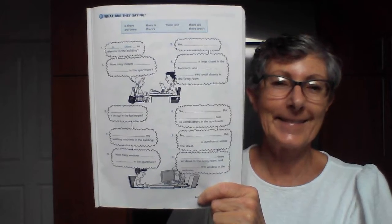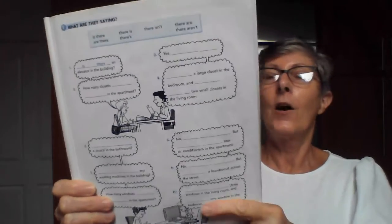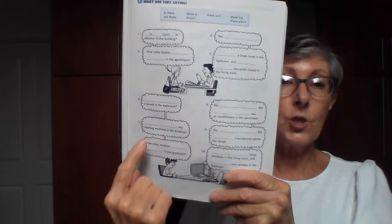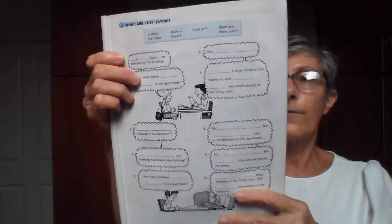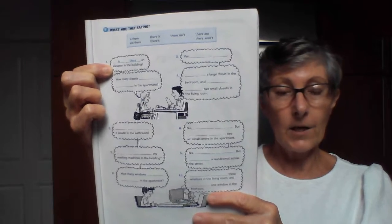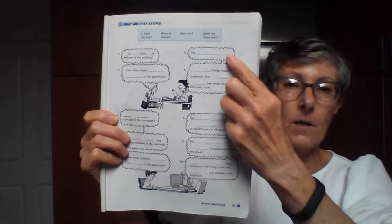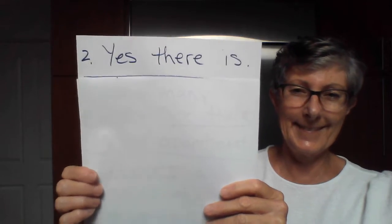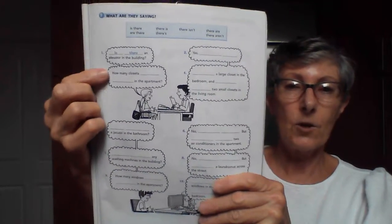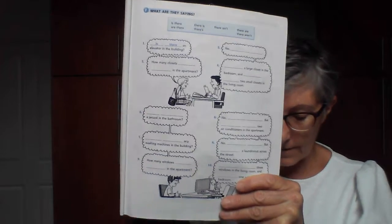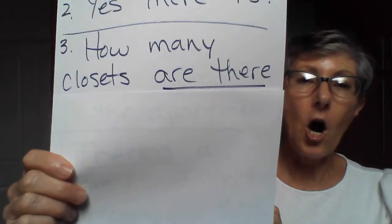Okay, see — I waited! Alright, so you put these words up here into the conversation. There are two conversations here — one and two. The first one is asking a question: 'Is there an elevator in the building?' Yes — then what is the answer going to be? The answer is 'Yes, there is.'